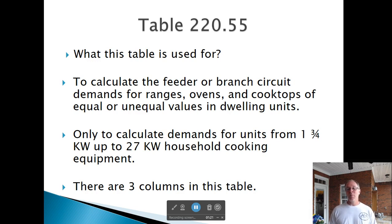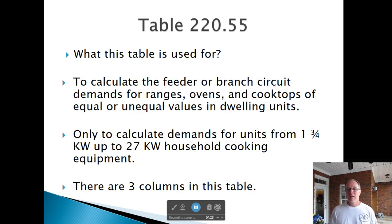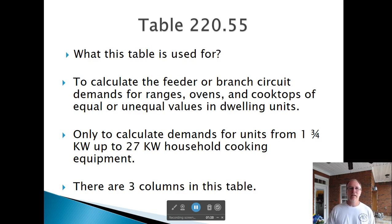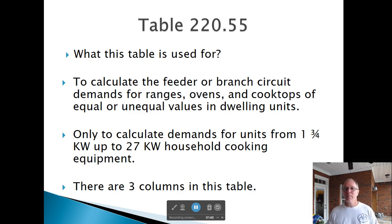If you've got 60 apartments and every one of them has a 12,000-watt range or oven, that's a lot of wire you don't need. Is everybody going to have their oven on at the same time? No. So we're trying to derate it and balance it out — kind of like how you don't turn all the lights on and the garage door and hot water heater and air conditioner on all at the same time.